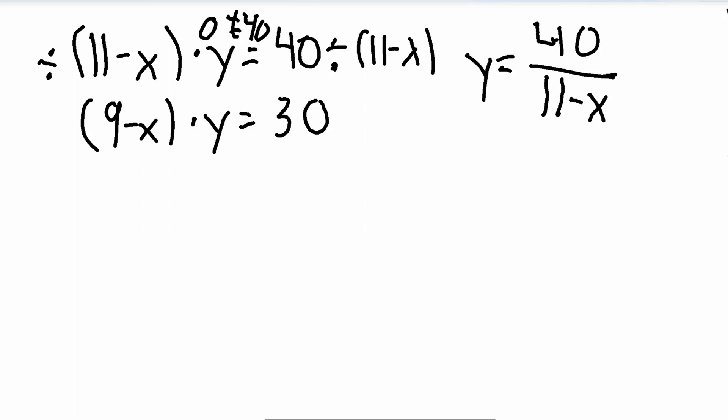So we don't have to worry about the denominator equaling 0 here. So now we have this equation, and this is y equals 40 divided by 11 minus x. So you can see we have y equals, and here we have a y, meaning we are able to plug in this part of the equation for y and substitute it. So let's do that. That gives us 9 minus x times, not times y, sorry, times 40 over 11 minus x is equal to, still using this equation, 30.